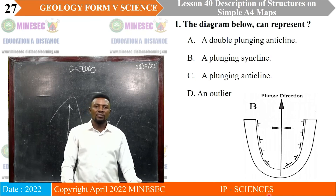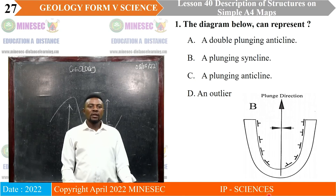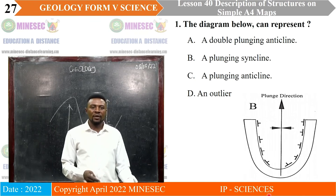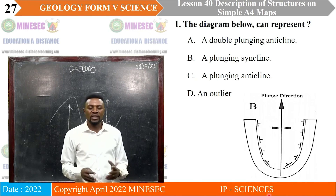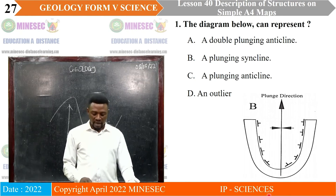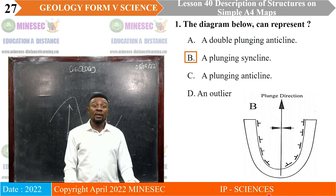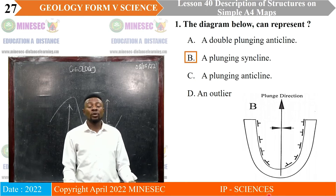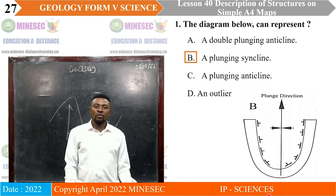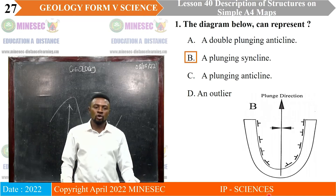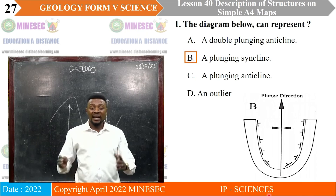The assignment diagram below can represent a fold. You have a closure of the limbs with a plunging syncline — a long arrow which is pointing away from the closure of the limbs, in the east portion.